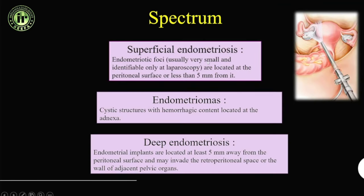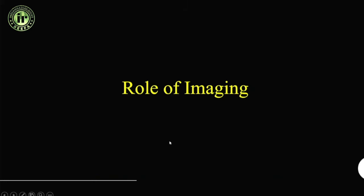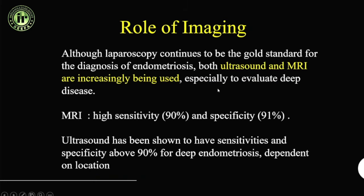Superficial endometriosis consists of very small deposits identifiable only at laparoscopy, located on the peritoneal surface or within 5 mm of it — these cannot be seen on MRI. Endometriomas are cystic structures with hemorrhagic content. Deep endometriosis consists of implants located at least 5 mm from the peritoneal surface that may invade the retroperitoneal space and adjoining pelvic organs — these are what we must identify and comment upon.